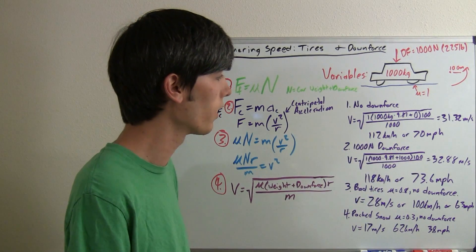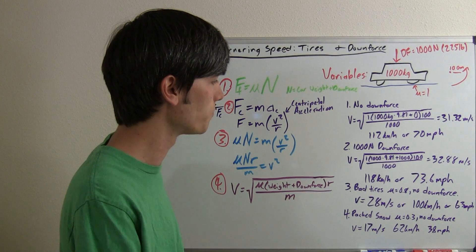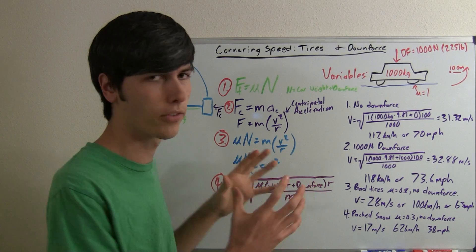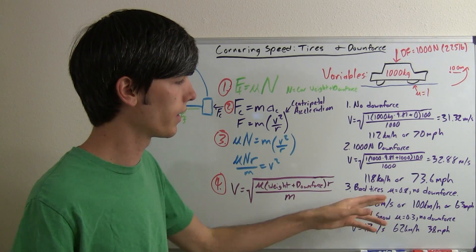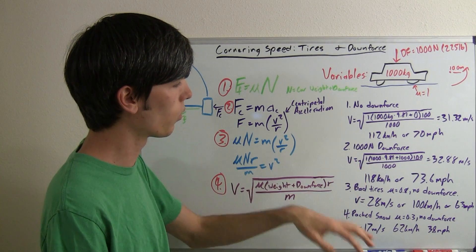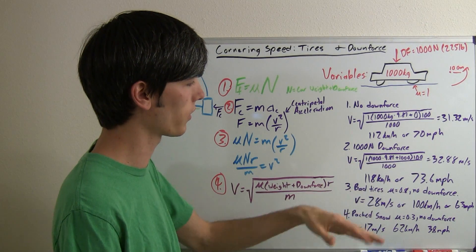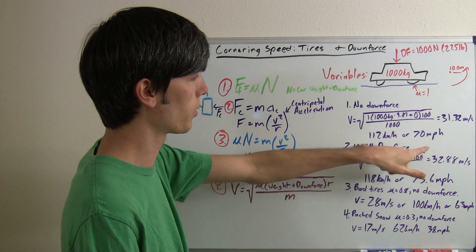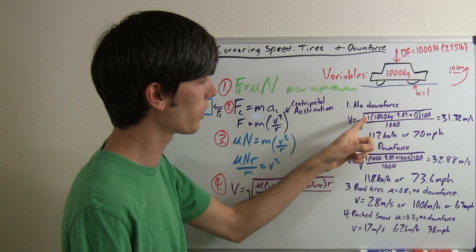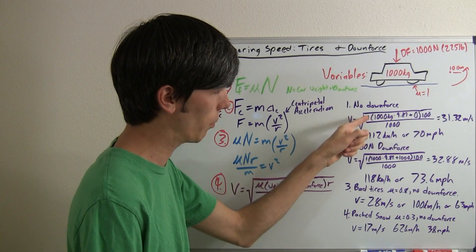If you increase that downforce even more, then of course it even gets higher. Alright, so let's take one more example, and let's say we have some crappy tires on there. They've only got a coefficient of friction with ground of 0.8. So we're going to eliminate the downforce, we're not going to say we have any downforce, we're just going to be comparing back to this 70 mile per hour scenario. So all we're doing is we're changing this one right here to a 0.8.